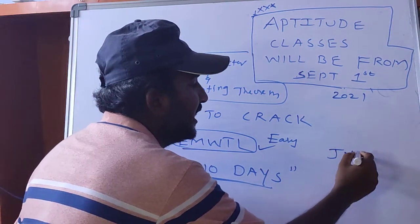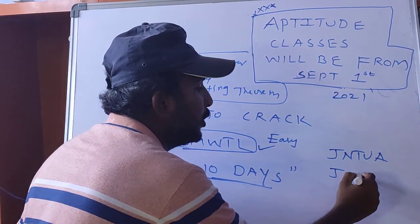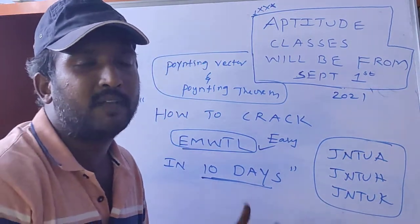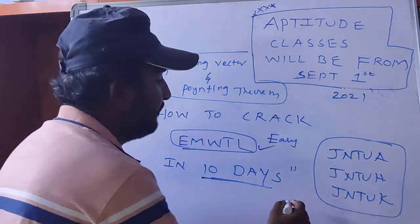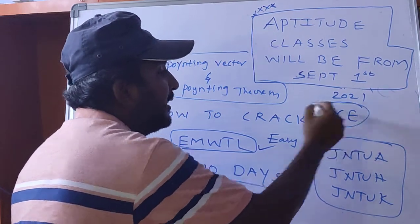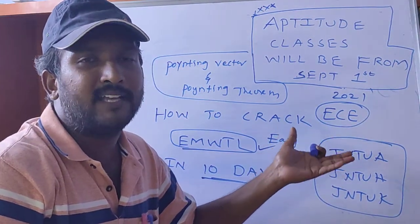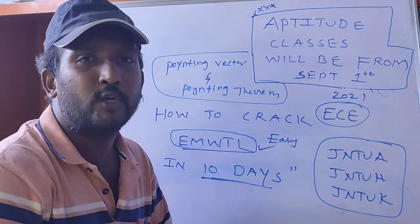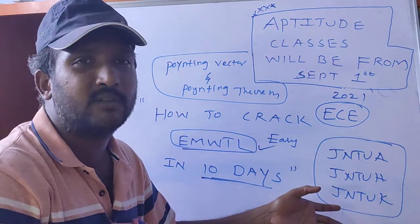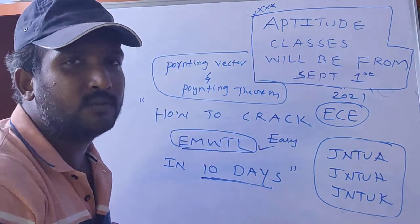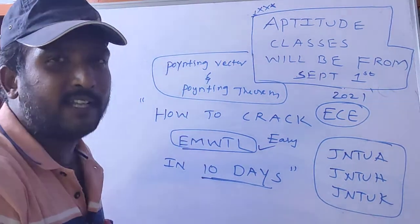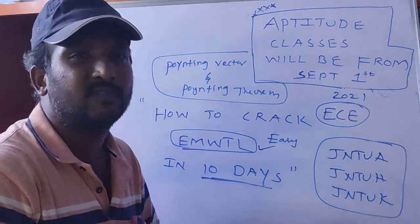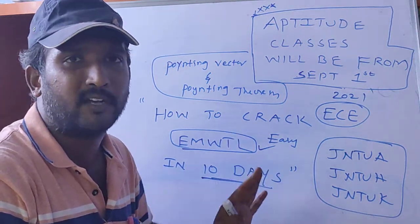This subject — I hope that for JNTU Anantapur, JNTU Hyderabad, and JNTU Kakinada — is a must for ECE students. It may be a second year first semester or second year second semester subject depending upon the university, but the syllabus is common for any university. Now we are going to see Poynting vector and Poynting theorem, and I will give some definitions.